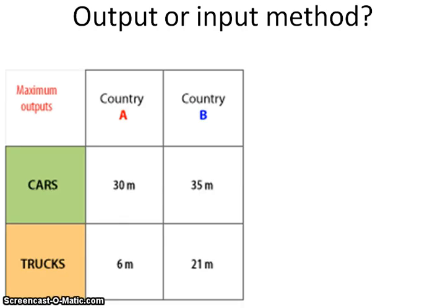Looking at this diagram, we've got two countries, A and B, and two products, cars and trucks. The boxes give away that this is the output method because it says 'maximum outputs.' What they're saying is that this is the maximum amount of these two goods that these countries can produce, so you can recognize that it's the output method.